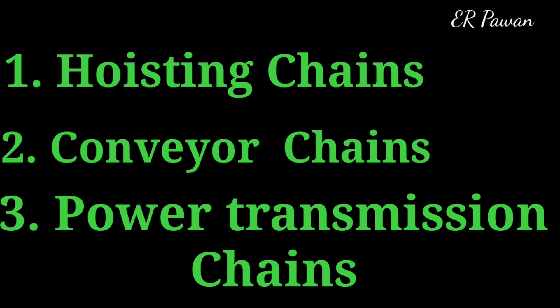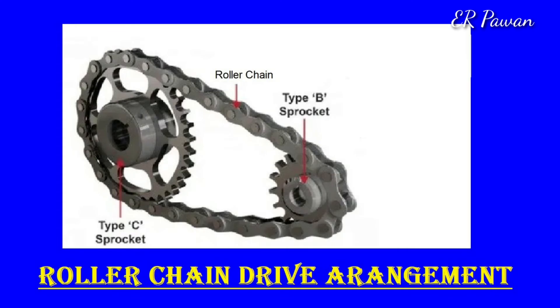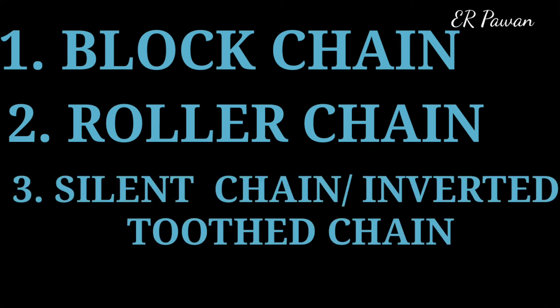As in our technical session we are discussing power transmission, today we will discuss power transmission through chain drives. Power transmission chains are easily identified by name as they are used to transmit power. This type of chain is made of steel and sometimes heat-treated to minimize wear and tear, with greater accuracy to run easily over the sprocket. Power transmission chains are categorized into three types: number one, block chains; number two, roller chain; and number three, silent chain or inverted tooth chain.